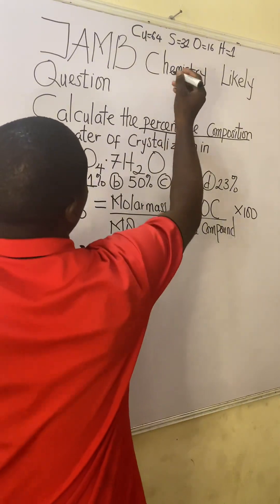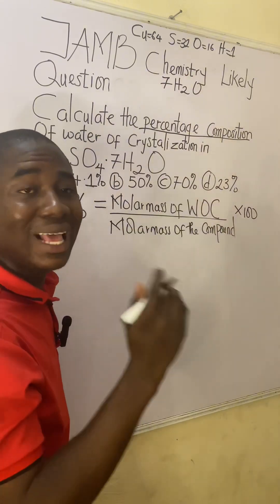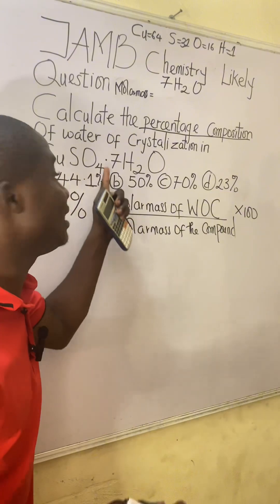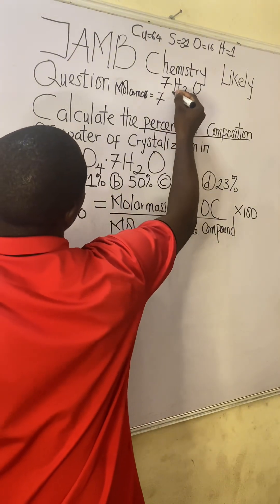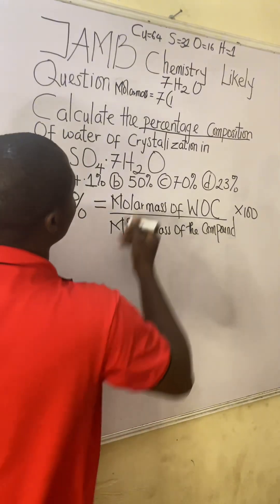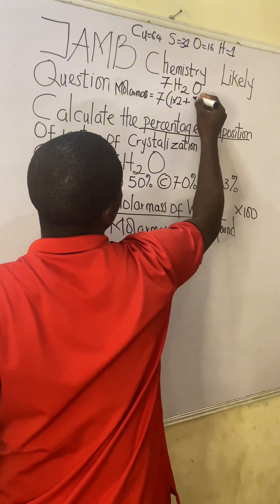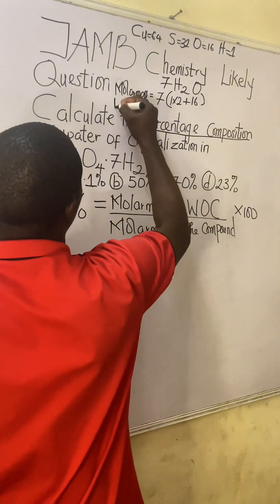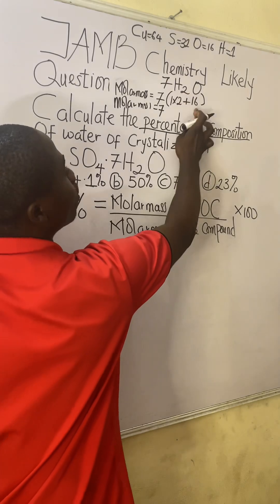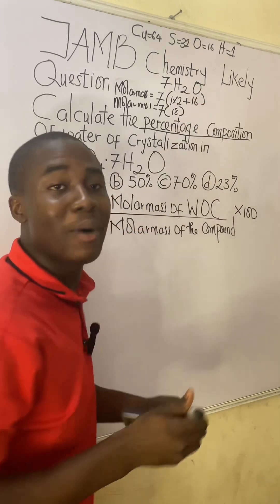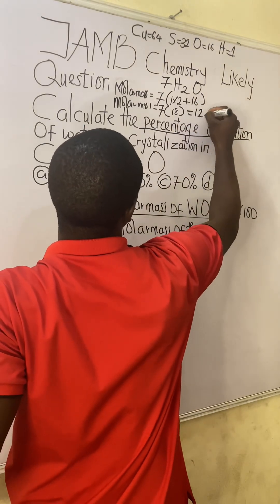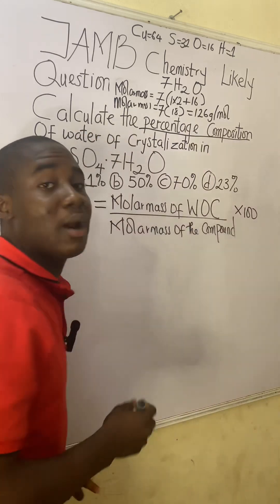The water of crystallization in this question is 7H₂O. To calculate its molar mass: 7 × (atomic mass of H × 2 + atomic mass of O) = 7 × (1 × 2 + 16) = 7 × 18 = 126 g/mol. So the molar mass of the water of crystallization is 126 g/mol.